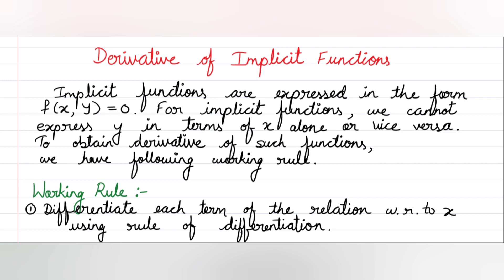An implicit function is expressed in the form f(x, y) = 0. So the standard form is f of x y equal to 0. What is the form of x y? Let's understand this with an example.